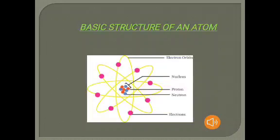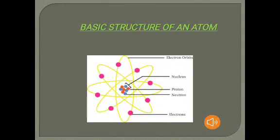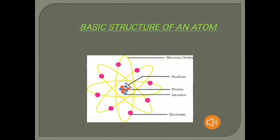Now we are coming to the basic structure of an atom. Atoms are built up of subatomic particles, that is protons, neutrons, and electrons. The nucleus, in the center of an atom, contains protons and neutrons, and protons and neutrons together are called nucleons. Orbits are the imaginary paths in which electrons revolve around the nucleus. Protons are positively charged, electrons have a negative charge, and neutrons have no charge — they are neutral.